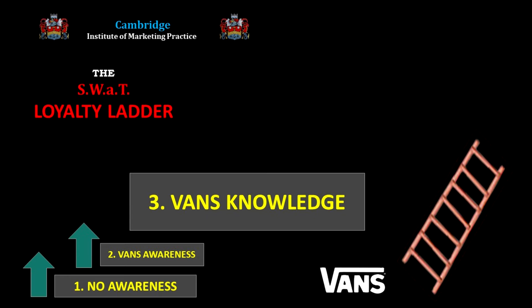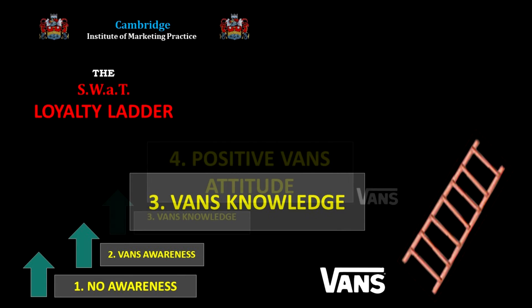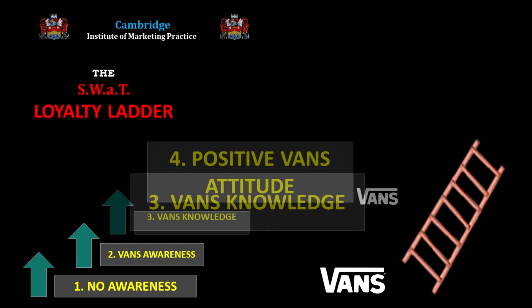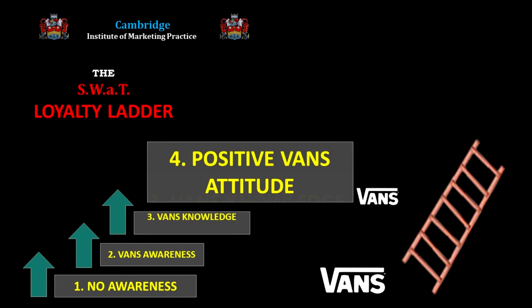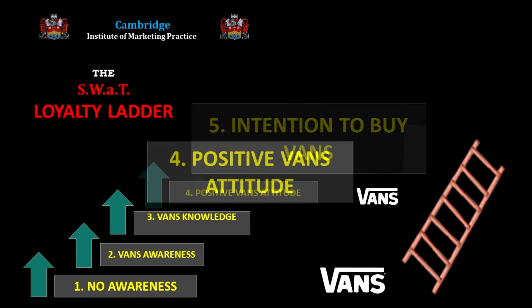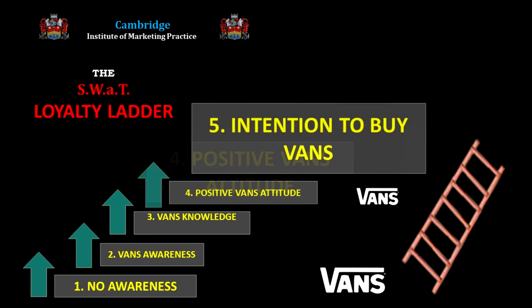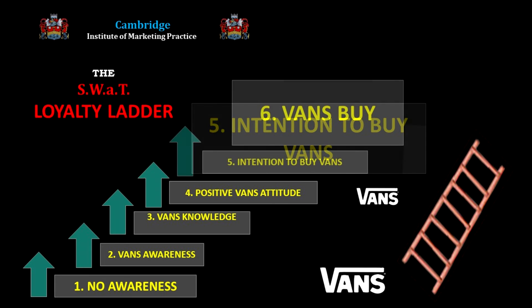I look at Vans advertising, ask other parents — they seem to be good quality, well made, durable, stylish, cool. I'm developing a positive brand attitude; I'm on rung four. Okay, I'm convinced: I will buy them for my princess, who of course deserves only the best. Purchase intention, rung five. And in due course, I take out a mortgage and buy our first Vans. Real purchase, active engagement — rung six.